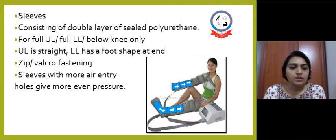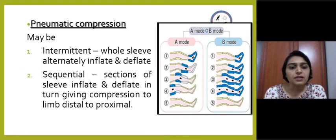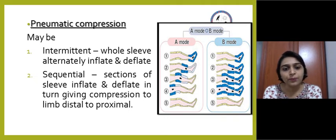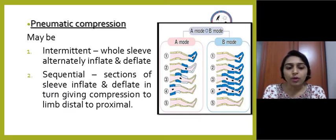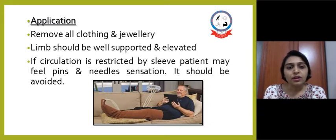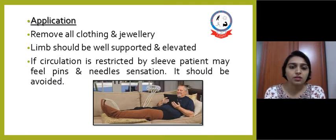Sleeves can be full for the upper or lower limb, or below-knee only. For the upper limb the sleeve is straight, while for the lower limb it has a foot shape. It can be fastened with a zip or velcro, and sleeves with more air entry holes provide more even pressure. Pneumatic compression can be intermittent or sequential. In intermittent, the whole sleeve alternately inflates and deflates. In sequential, sections inflate and deflate in turn, giving compression from distal to proximal. For application, remove all clothing and jewelry, and support and elevate the limb. If circulation is restricted, the patient may feel pins and needles, which should be avoided by adjusting pressure.